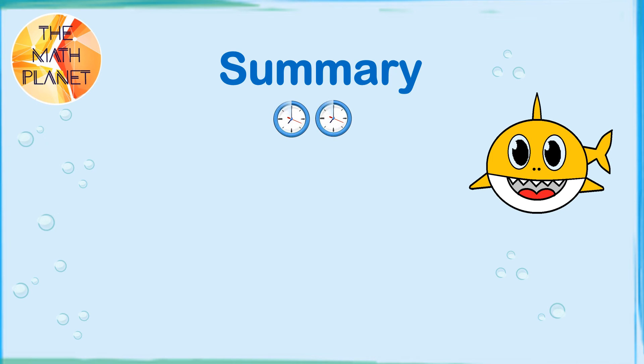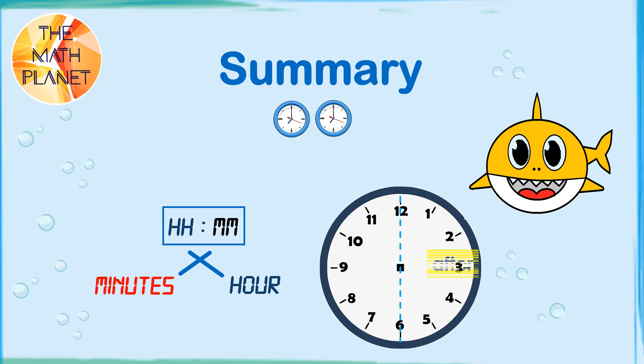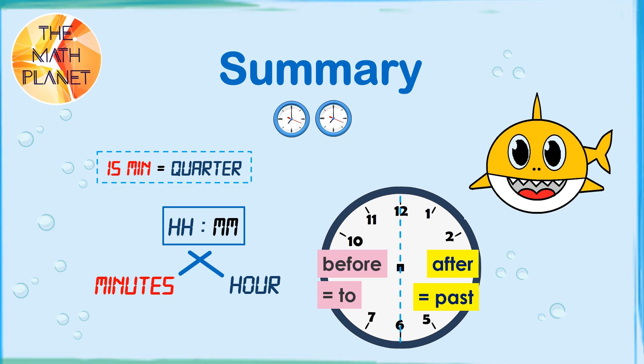Let's sum up today's lesson. If the digital clock shows hours, column, minutes, we criss and say the minutes first, then cross and say the hours next. Today, we also learned about telling the time after and before the hour. Another keyword for after the hour is past. Another keyword for before the hour is to. We also learned that quarter of an hour is equal to 15 minutes and half an hour is equal to 30 minutes.